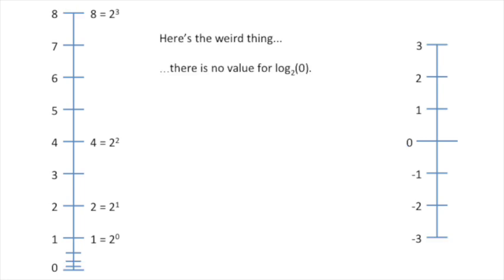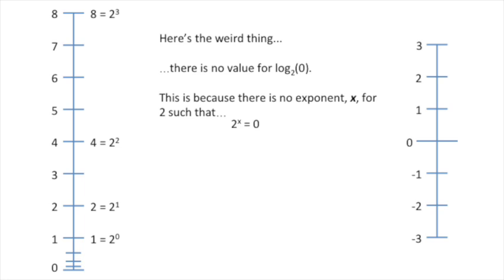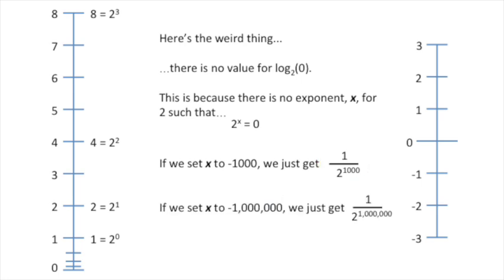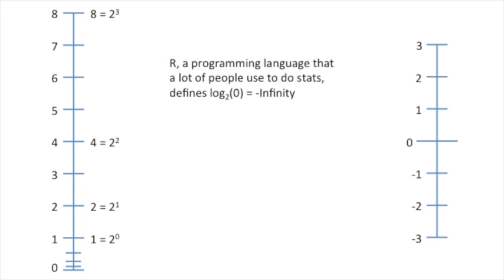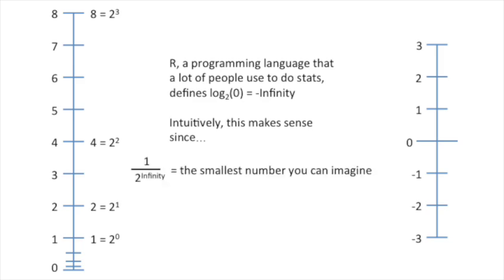Here's the weird thing: there is no value for log base 2 of 0. This is because there is no exponent x for 2 such that 2 to the x equals 0. If we set x to negative 1,000, we just get 1 over 2 to the 1,000th — a tiny number, but still greater than 0. If we set x to negative 1 million, we get 1 over 2 to 1 million — a super tiny number, but still greater than 0. Just so you know, R defines log base 2 of 0 to be equal to negative infinity. Intuitively this makes sense, because 1 over 2 to infinity equals the smallest number you can imagine, which in my mind is 0.